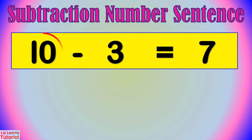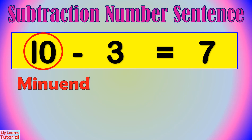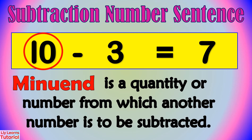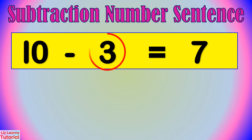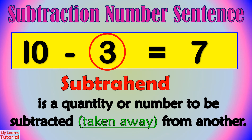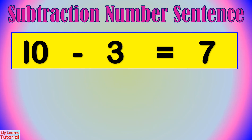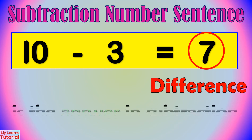We can read this as 10 minus 3 equals 7. This is the minuend. Minuend is the quantity or number from which another number is to be subtracted. Subtrahend is the quantity or number to be subtracted, taken away from another. The answer in subtraction is called difference.